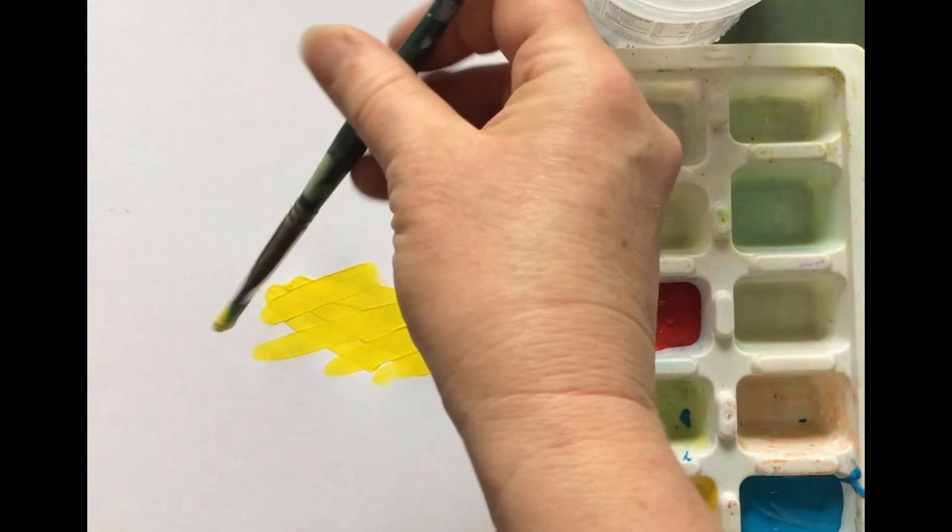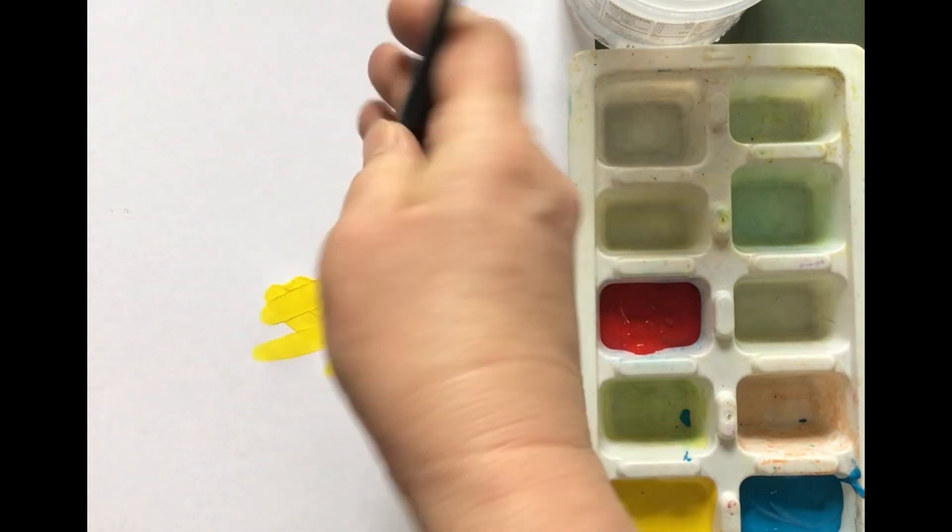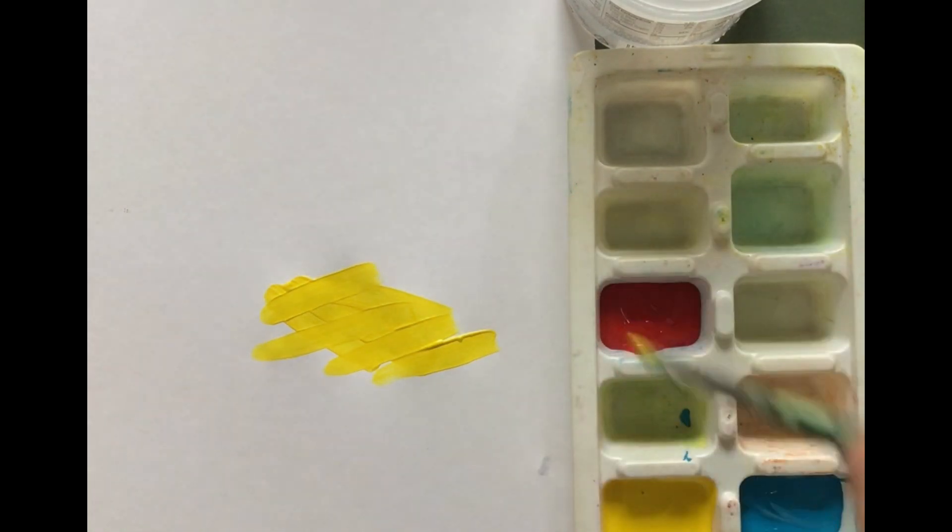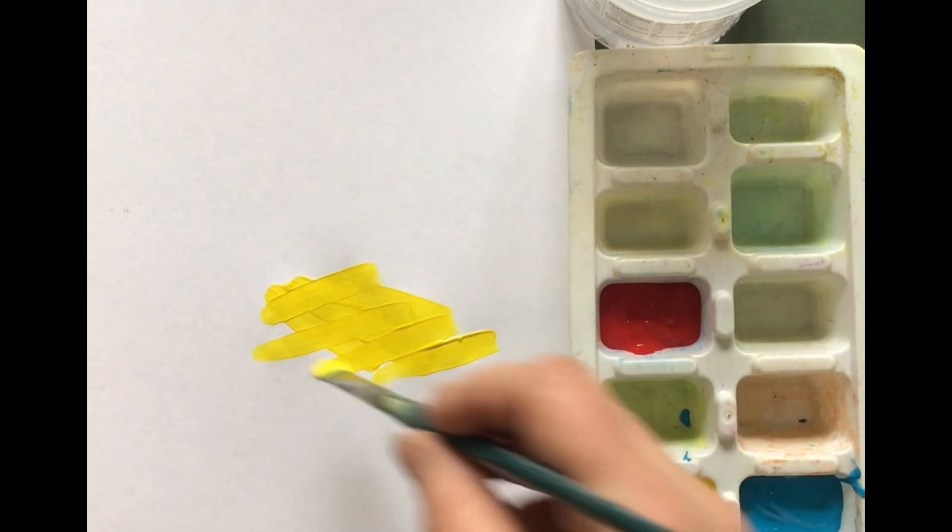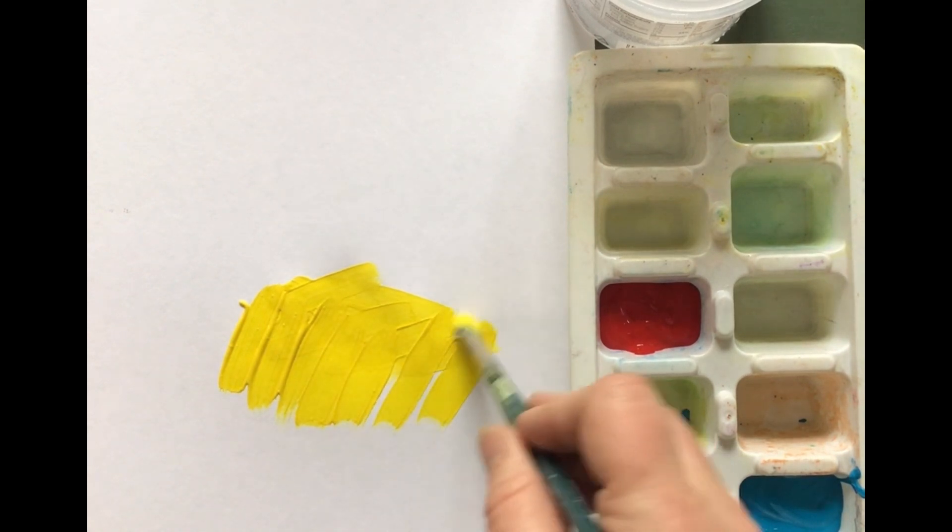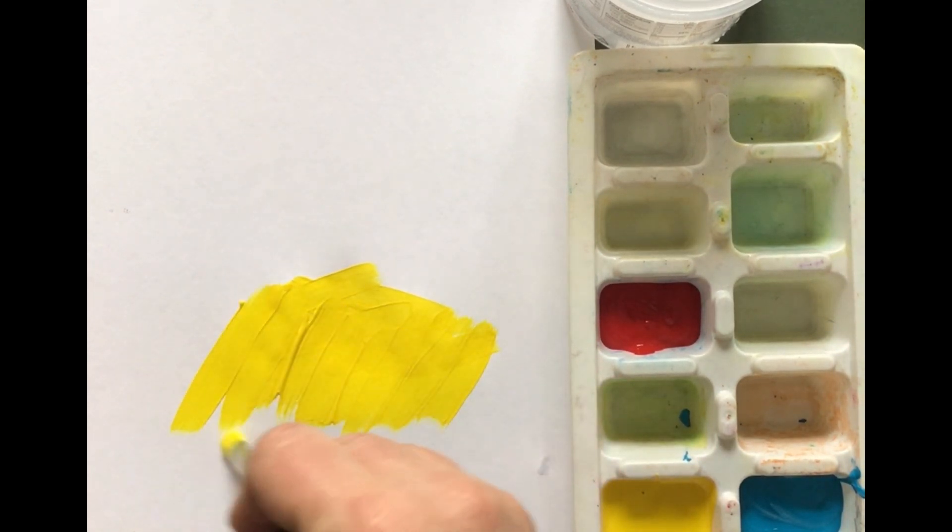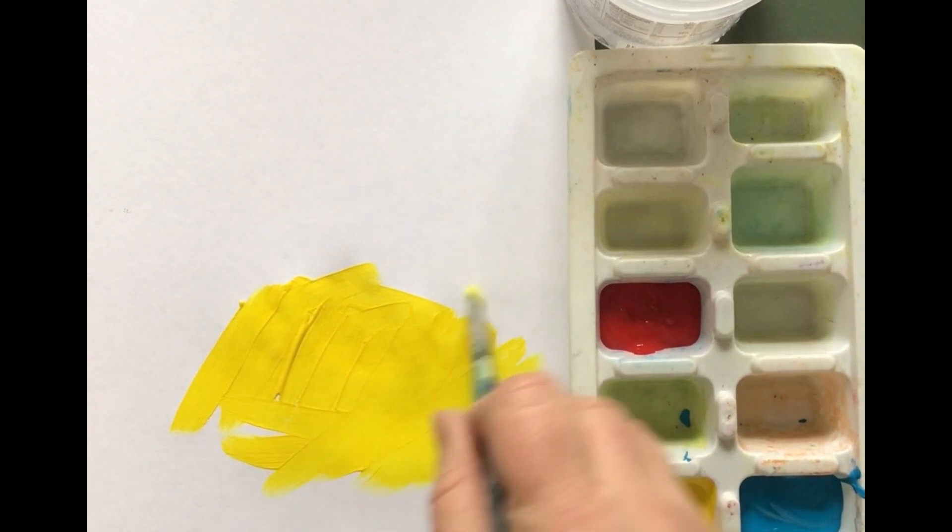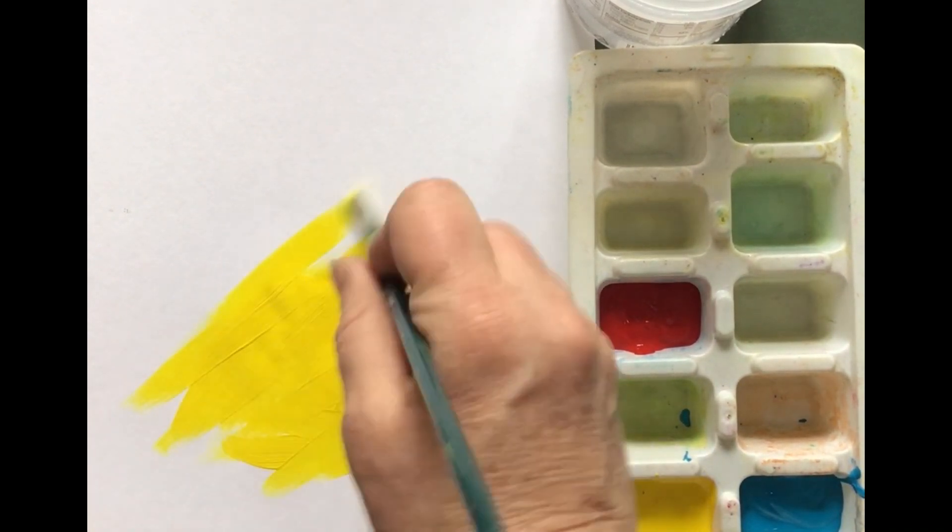See how I'm just kind of twirling it around? Figure out how you can do that. That feels comfortable for you. So I'm going to dip in and then I'm going to stroke nice and easy. I'm not smashing the brush. I'm stroking the brush and I'm thinning it out. I'm making the paint thinner. Do you see that?